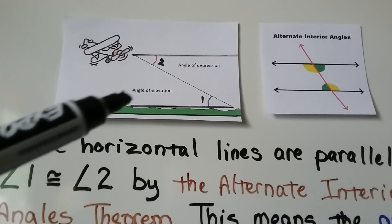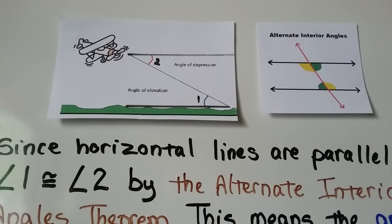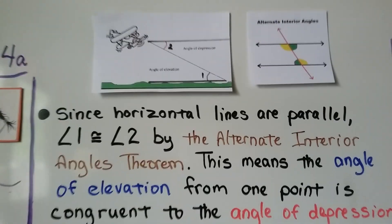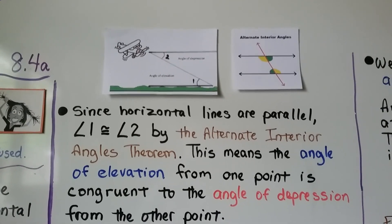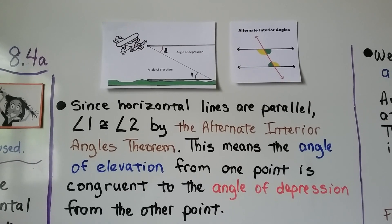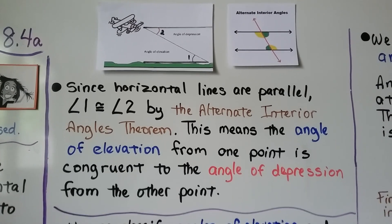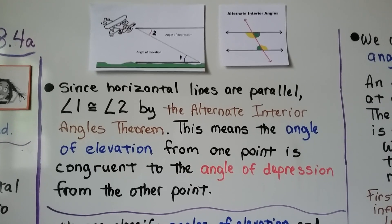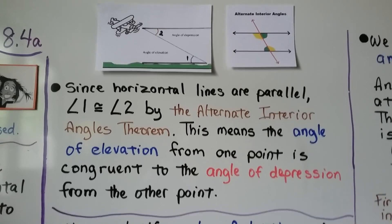That's the angle of depression and that's the angle of elevation. Since horizontal lines are parallel, angle 1 is congruent to angle 2 by the alternate interior angles theorem. This means the angle of elevation from one point is congruent to the angle of depression from another point.